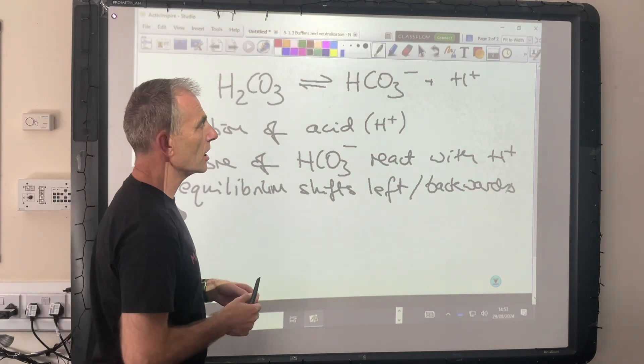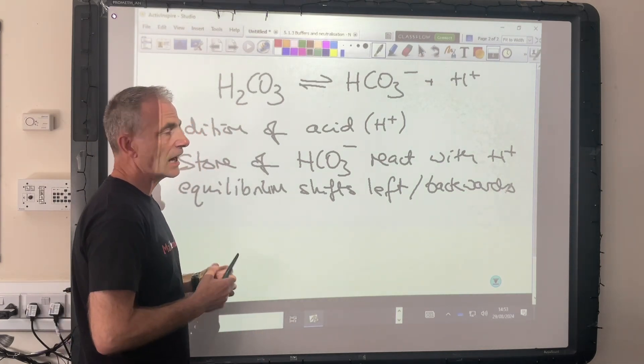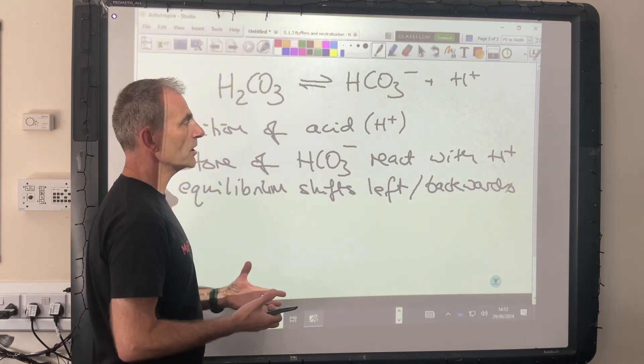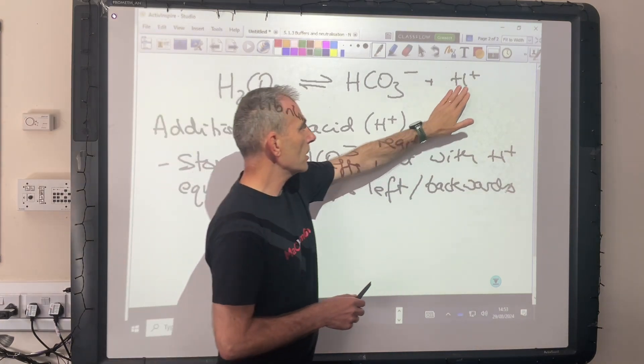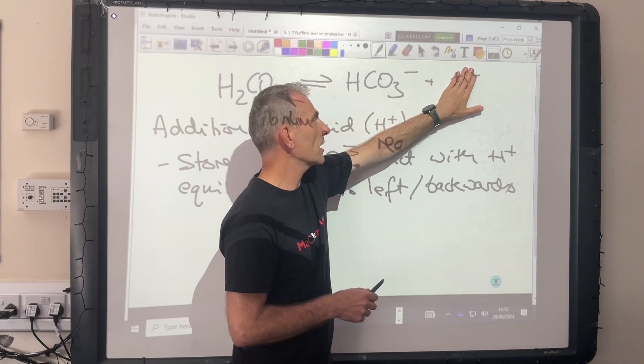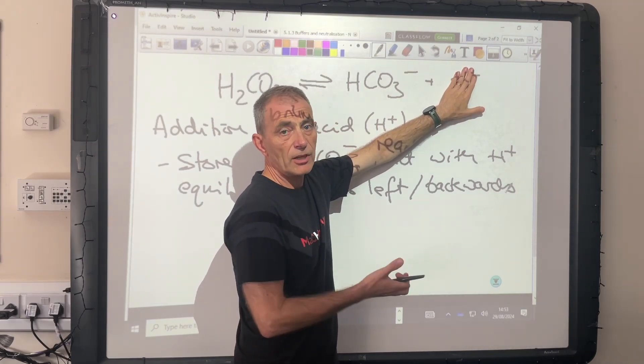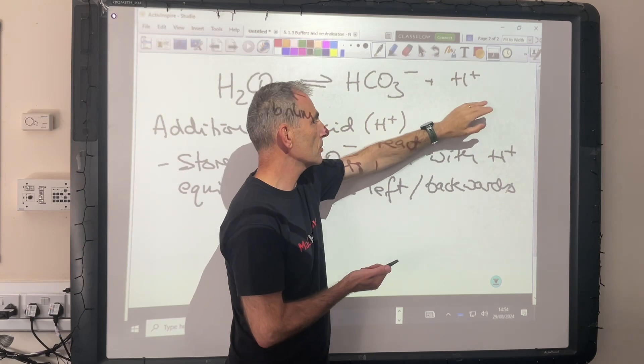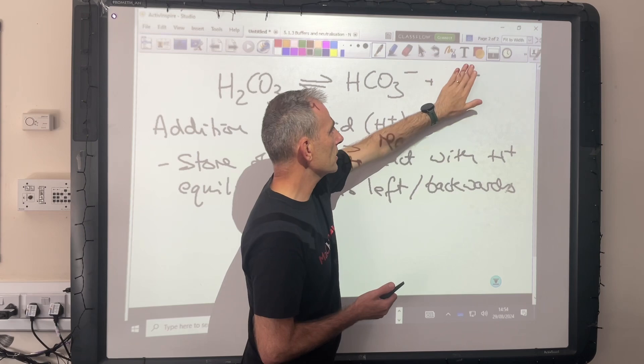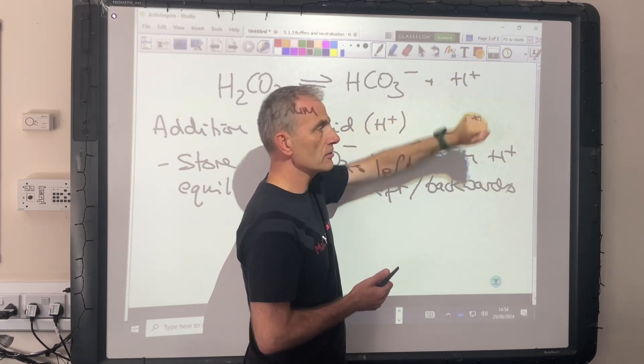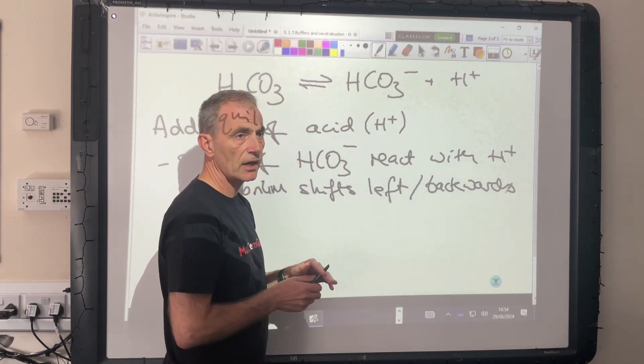Let's think about the opposite scenario now. We've got alkali entering the bloodstream, OH minus ions. They are going to react with those H plus ions and turn them into H2O molecules. Effectively, it's going to decrease the concentration of those H plus ions.